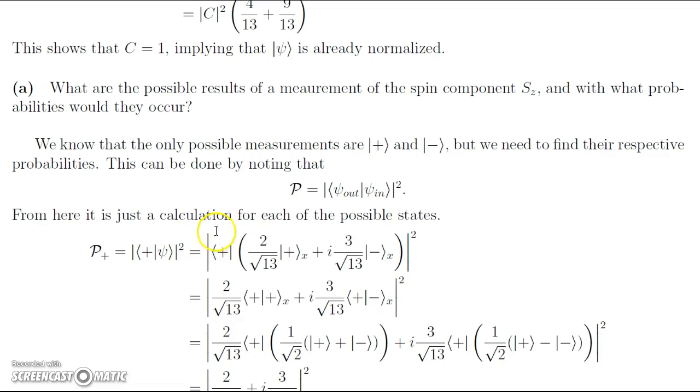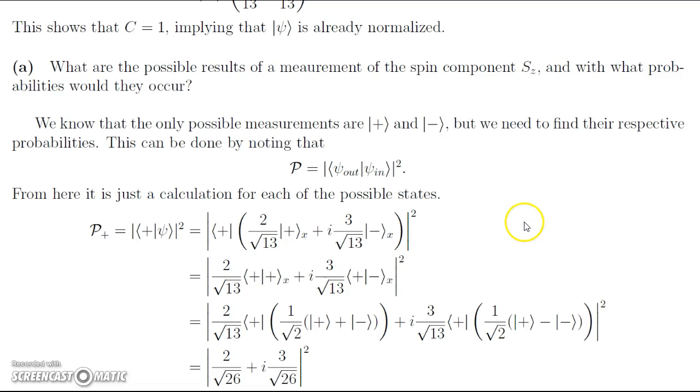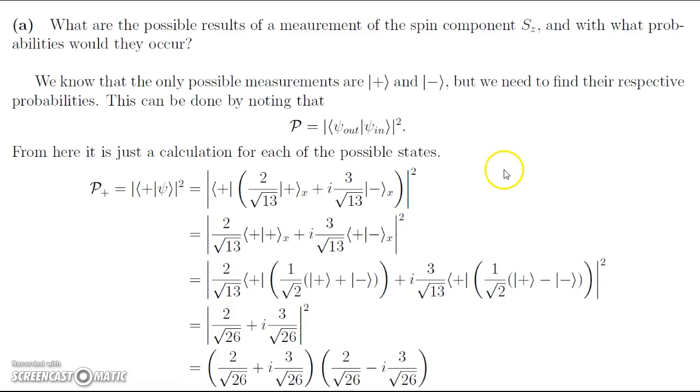Now that we have that, we want to look at the possible results of a measurement of the spin component in the z direction, Sz, and with what probabilities would they occur. We should note that we already know the possible measurements of the spin up and spin down, but we need to find their respective probabilities. This can be done by noting the important result that the probability of measuring a state as it's going out when it's prepared in a state that it's coming in with is equal to the inner product of those two, modulus squared.